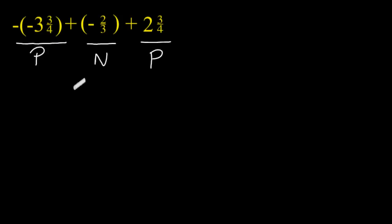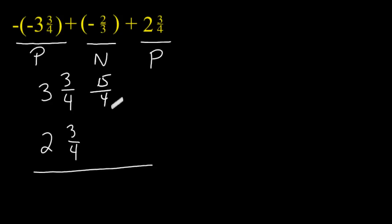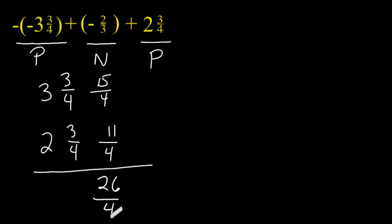So let's start by combining our positive values together. We have 3 and 3 fourths and we have to add that to 2 and 3 quarters. If we express each one of these as improper fractions, 3 and 3 quarters would be expressed as 15 quarters, and 2 and 3 quarters would be expressed as 11 quarters. Because they are both positive, when we combine them the result will be positive: 15 quarters and 11 quarters gives us 26 quarters.